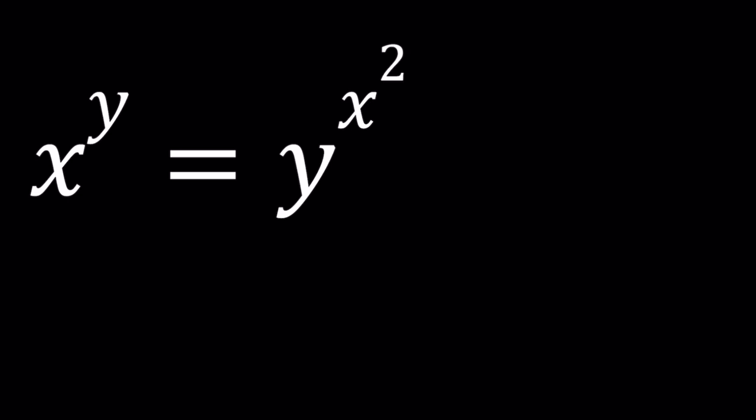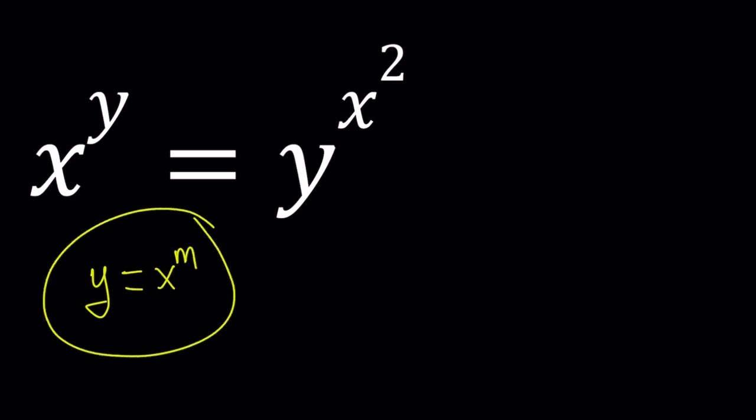So we have this equation, and in a similar problem I shared, we used a technique called change of variables, like replacing y with kx or something like that. But for this problem, it's a little more problematic, so we're going to use a different approach. Instead, I'm going to use y equals x to the power m, and you're going to notice that this will actually help us solve this problem.